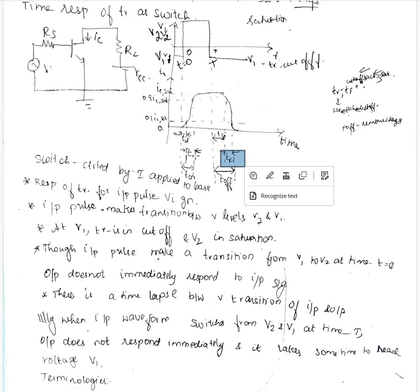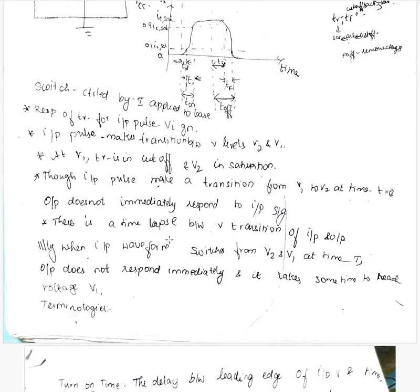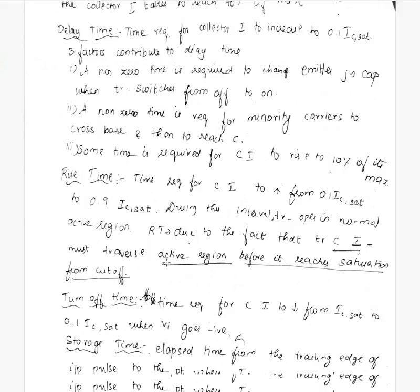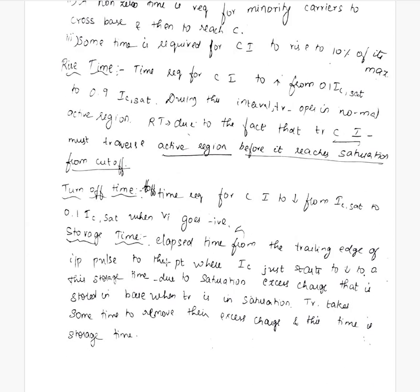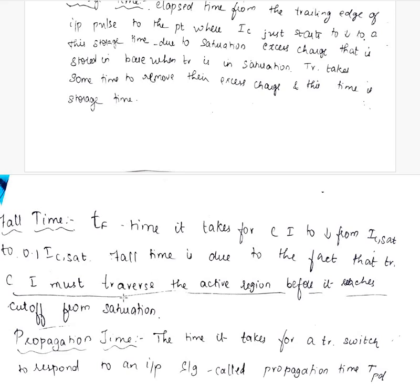T on is td plus tr, which is from 0 to 0.9 IC sat. T off is ts plus tf. We have delay time, rise time, turn off time, storage time, fall time, and finally the propagation time. The time it takes for a transistor switch to respond to an input signal is called the propagation time tpd.